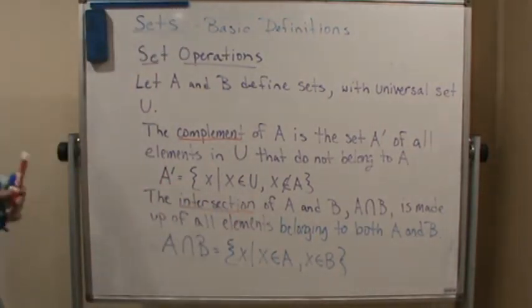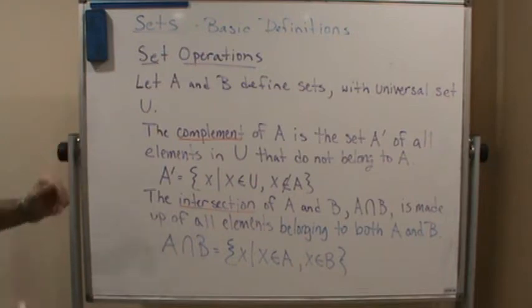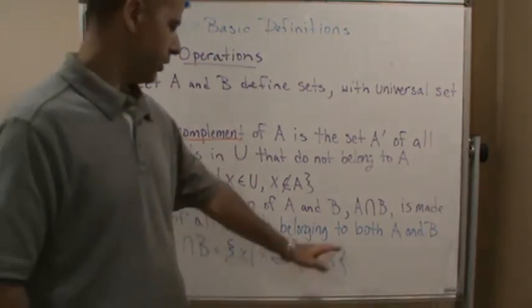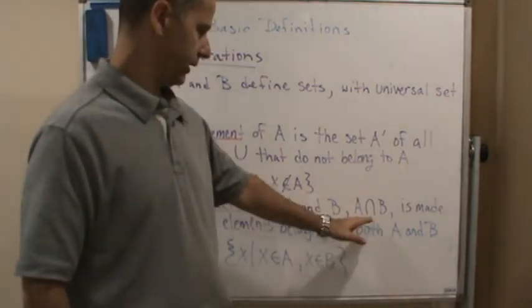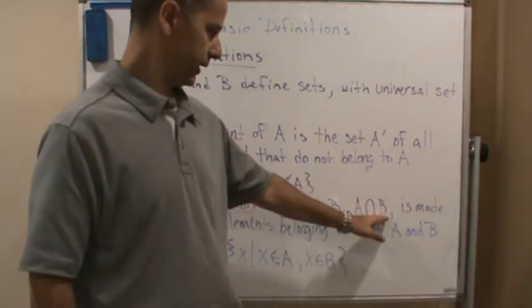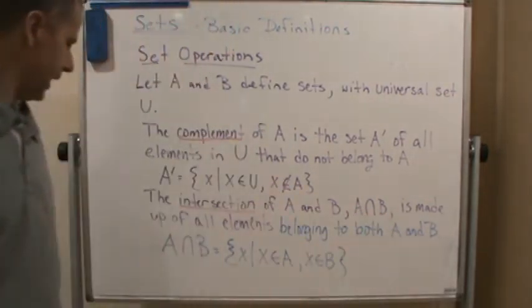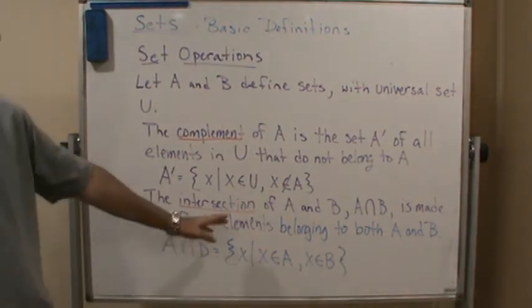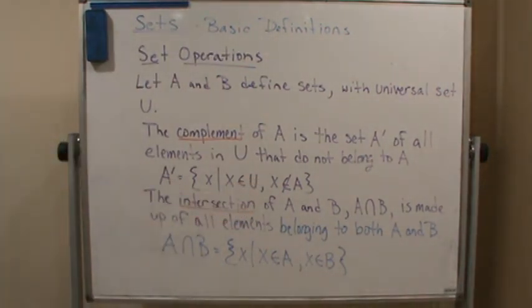If we look at the intersection of sets A and B denoted by this writing, so this symbolism, A intersect B is made up of all elements belonging to both A and B.